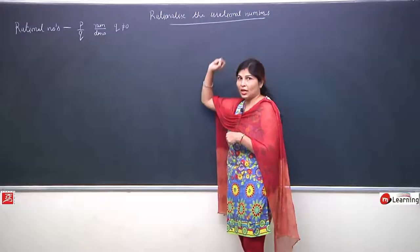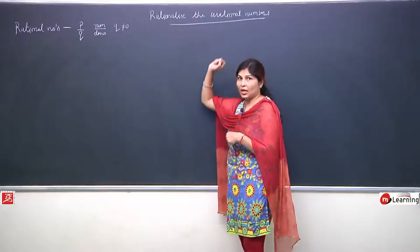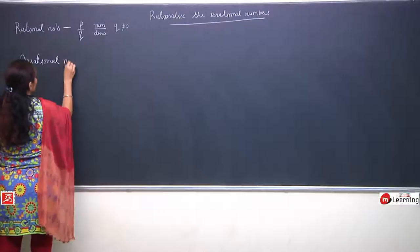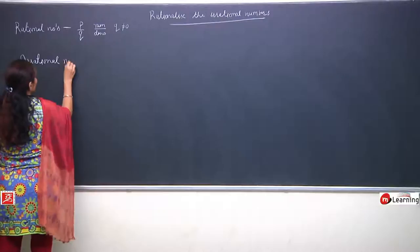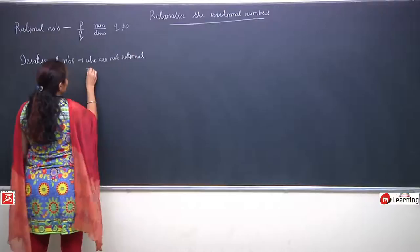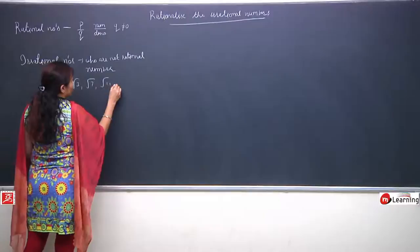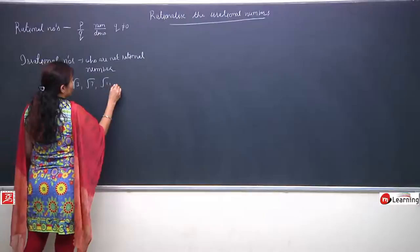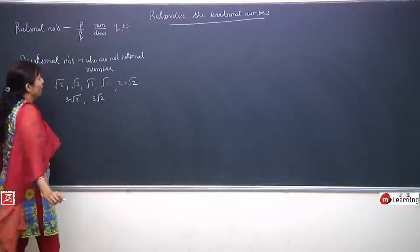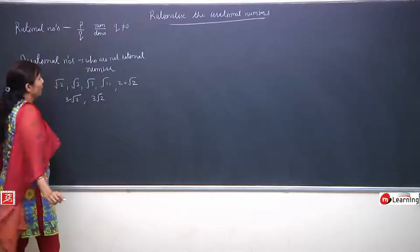Now I am coming to irrational numbers, because our topic is related to irrational numbers. Irrational numbers are those numbers which are not rational numbers - they cannot be written in p upon q form. Like root 2, root 3, root 7, root 11, 2 plus root 2, 3 minus root 2, 3 root 2, and so on. Any operation can be between them. These are examples of irrational numbers.